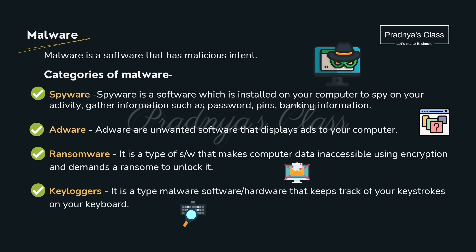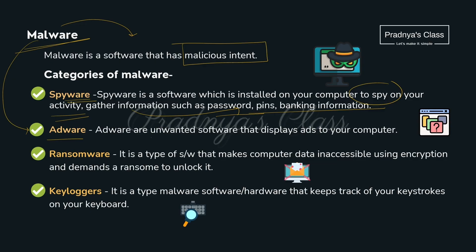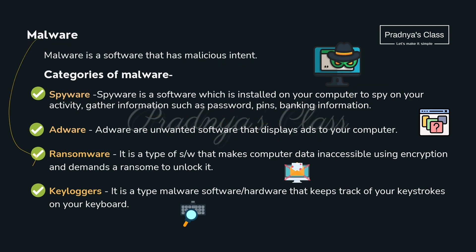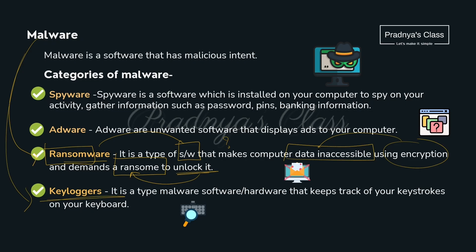The third category of harmful programs is malware — made up of the words malicious software. The first type is spyware, which spies on your activity and gathers information like passwords, PINs and banking information. The second type is adware — unwanted software responsible for displaying ads on your computer. The third type is ransomware — using encryption it makes your system data inaccessible, and to unlock it you must pay a ransom. There are also keyloggers, which can be hardware or software that keeps track of your keystrokes — as you type anything it gets recorded.